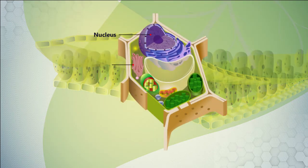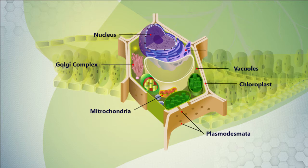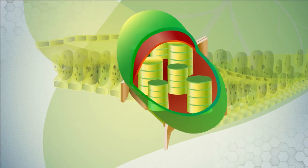Here are the different parts of the cell: nucleus, Golgi complex, mitochondria, plasmodesmata, chloroplast, vacuoles, and endoplasmic reticulum. This cycle then continues inside the chloroplast.